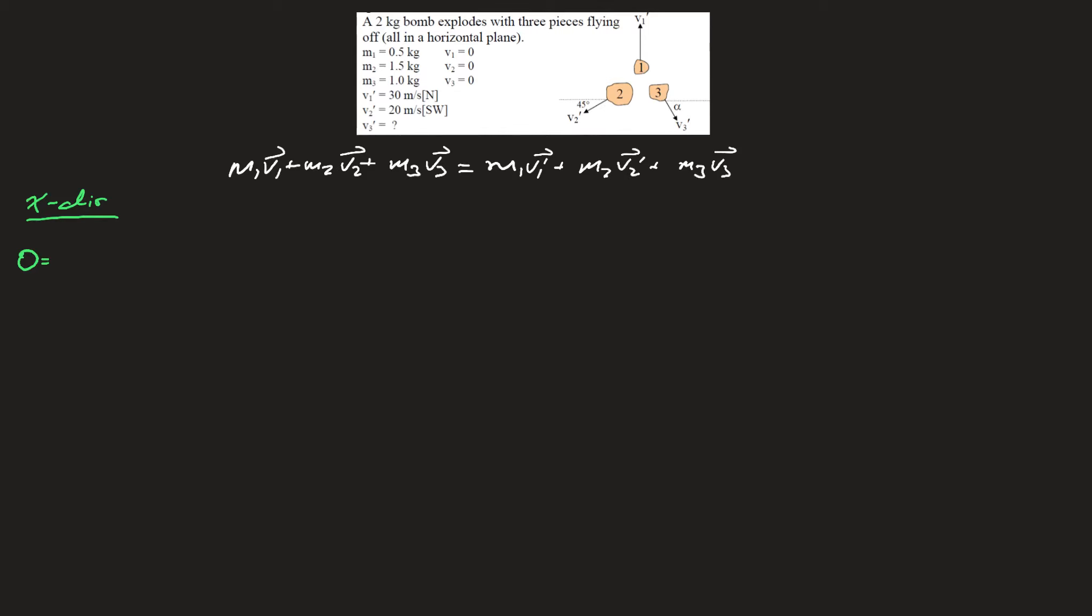Mass number 2 now does have some valuable component. We know that mass 2 is 1.5 kilograms times v2 prime, which is 20 meters per second southwest. West is in the negative direction, so it'll be negative 20 meters per second times cos 45.